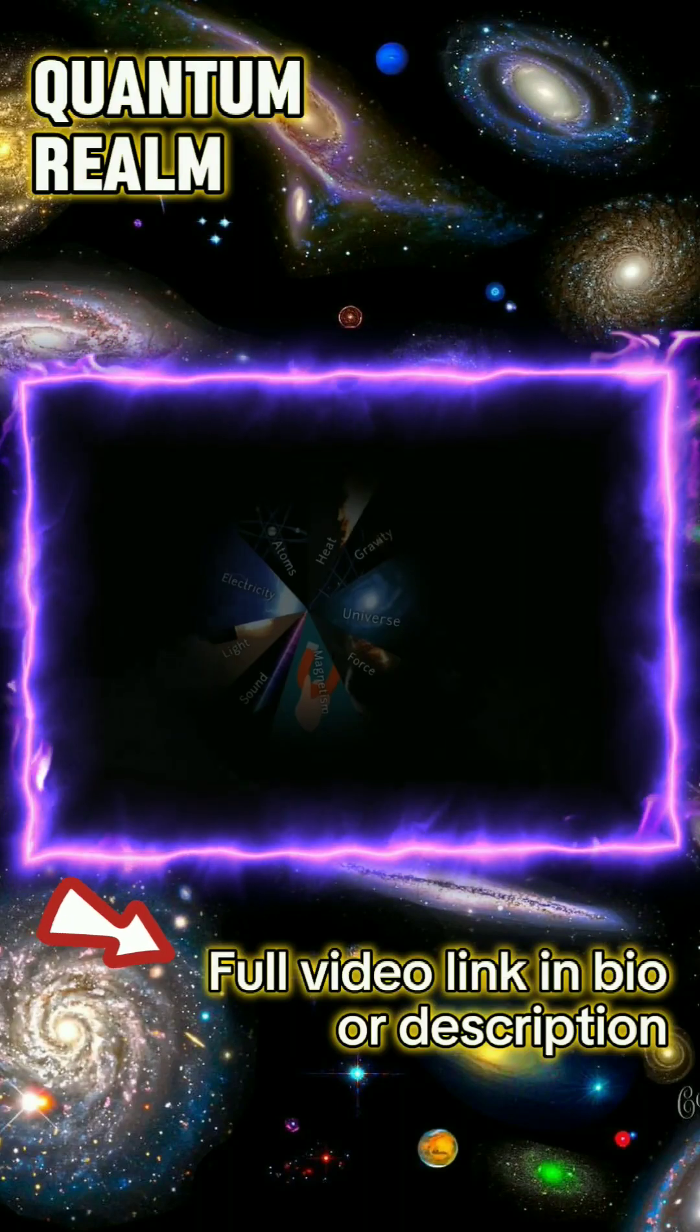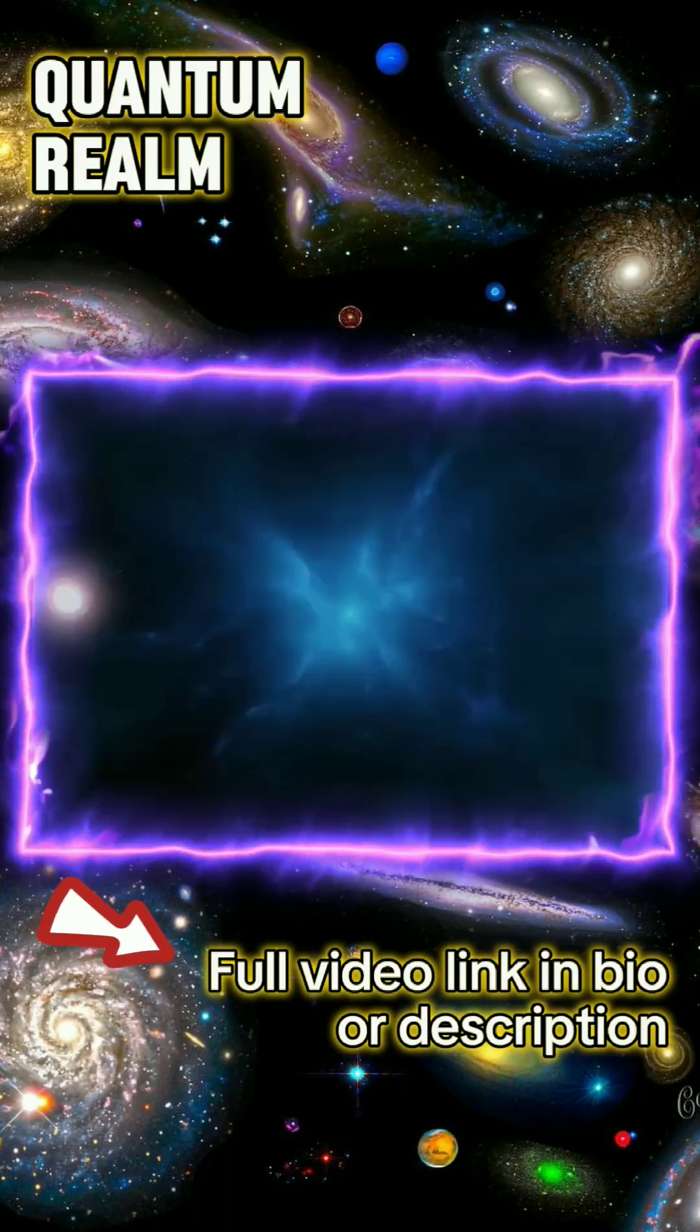We're living inside of a matrix. Now, what is the matrix made of? It's made of light. How do we know this?